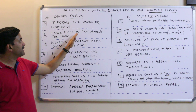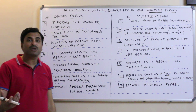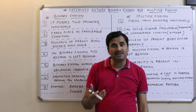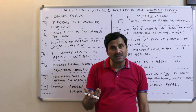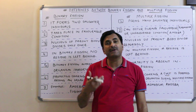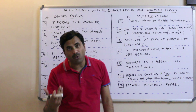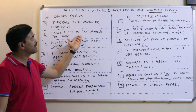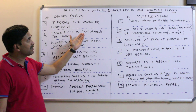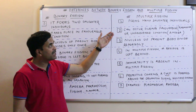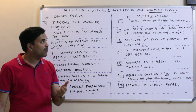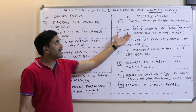The second point: binary fission always takes place in favorable conditions. Favorable conditions mean optimum temperature, enough quantity of food, and availability of water. These are the favorable conditions. Binary fission always happens in favorable conditions, while multiple fission can occur in favorable conditions as well as in unfavorable conditions.